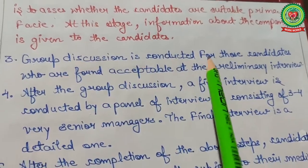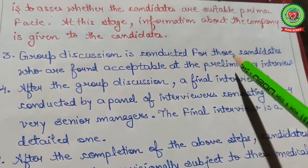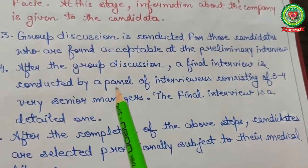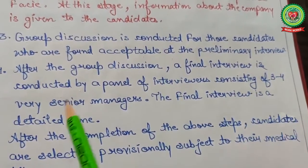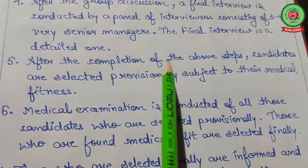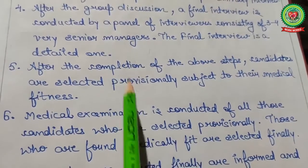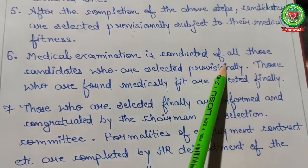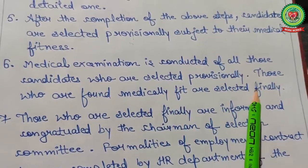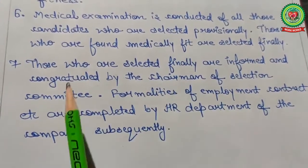At this stage, information about the company is also given to the candidates. Step three is group discussion — conducted for those candidates who are found acceptable at the preliminary stage. Step four is the final interview, conducted by a panel of three to four very senior managers; it is a detailed interview. Step five is provisional selection — candidates are selected provisionally subject to their medical fitness.